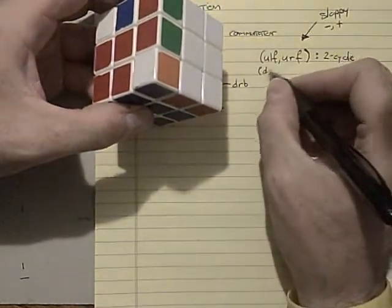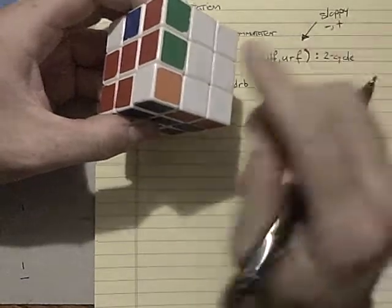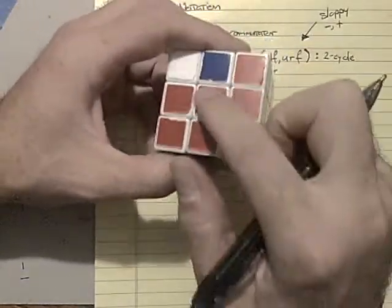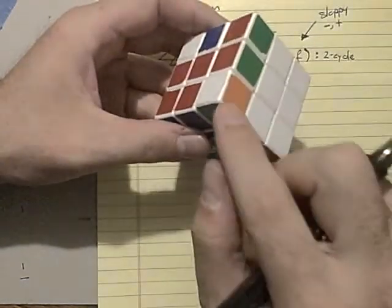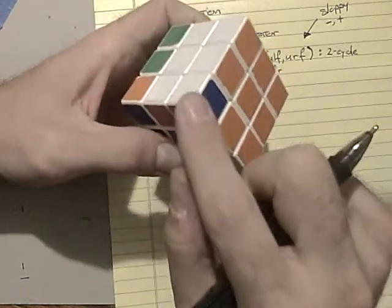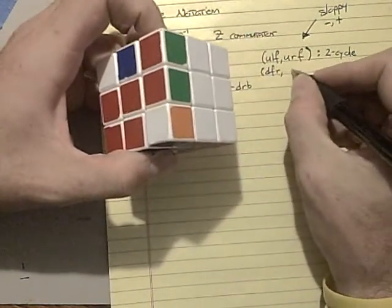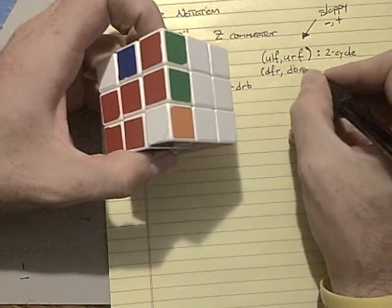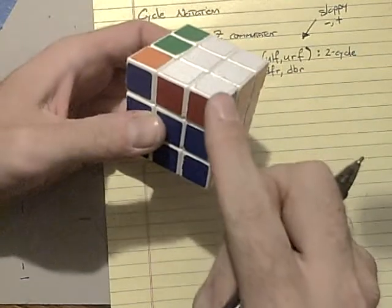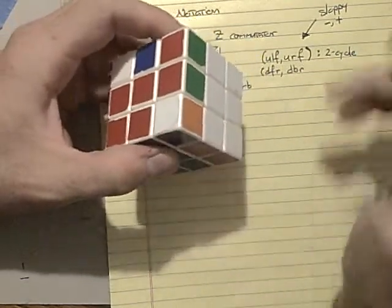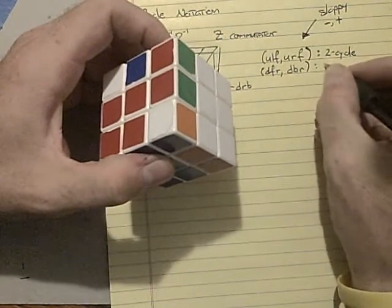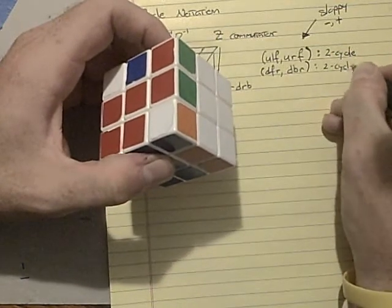So I'll start another set of parentheses. I have down, front, right. That's the white, red, and blue. White, red, blue is over here. So the down, front, right went down, back, right. And then the down, back, right is in front. So that's another two cycle on the corners.